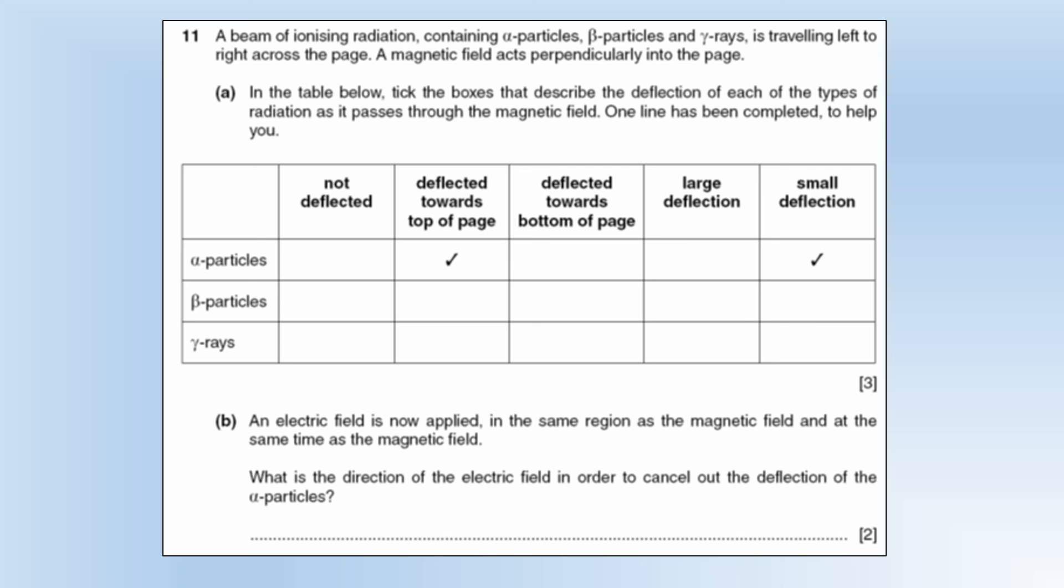So our magnetic field is going into the page. They're going left to right. So our middle finger points left to right. Our first finger points into the page. So you can see how indeed our thumb tells us our particle goes towards the top. And we're going to get a small deflection because an alpha particle has quite a lot of mass.